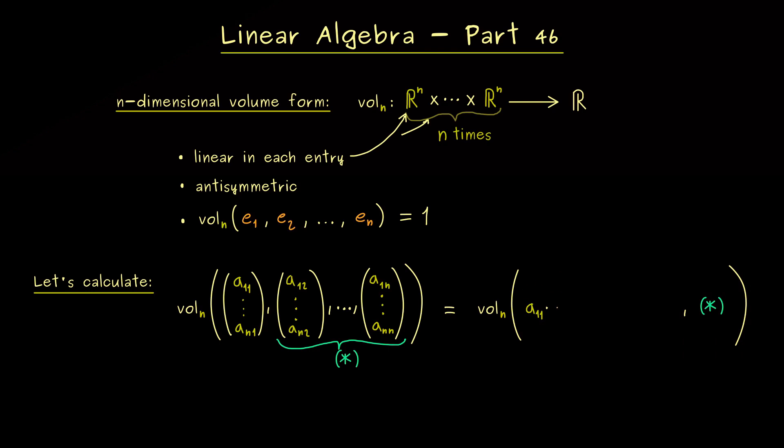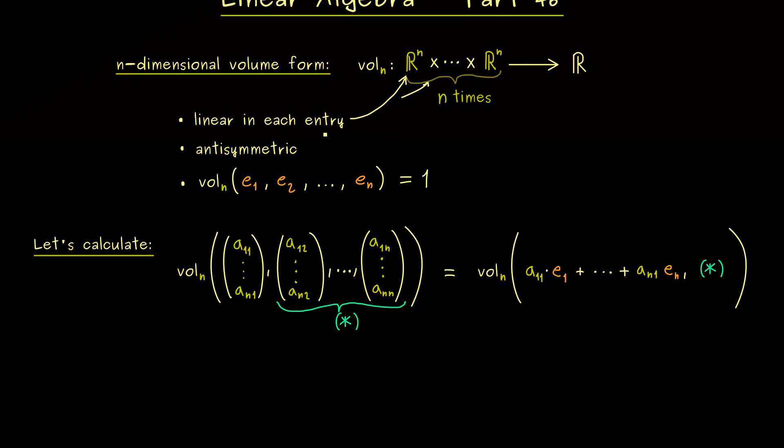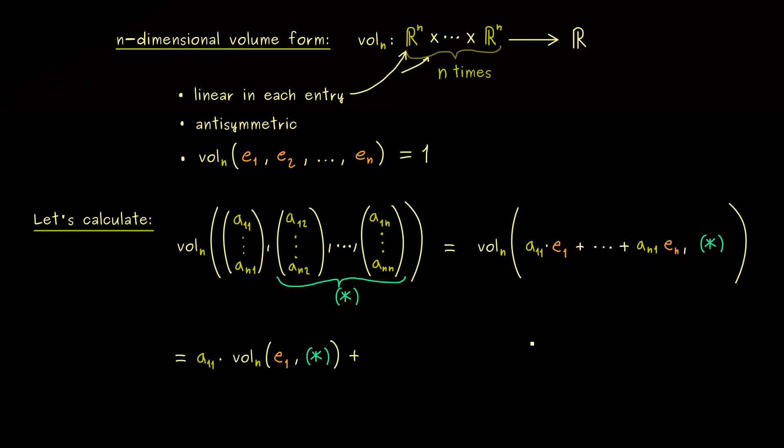Namely, we do that by using the canonical unit vectors. So you see, without changing much, we now have a linear combination. Therefore, now we are able to use the linearity in the first entry. This means we can pull out the addition sign and the scalar multiplication. And of course, we do that for the whole linear combination, and this is the result.